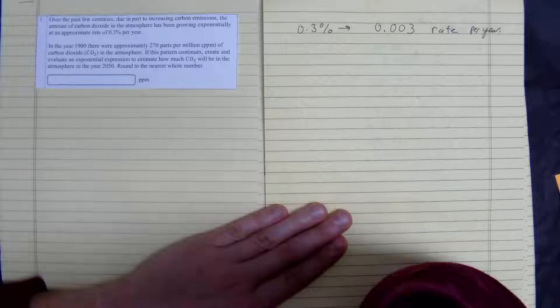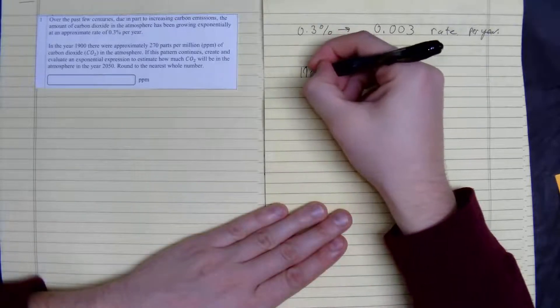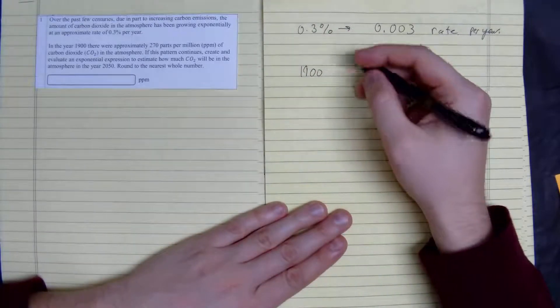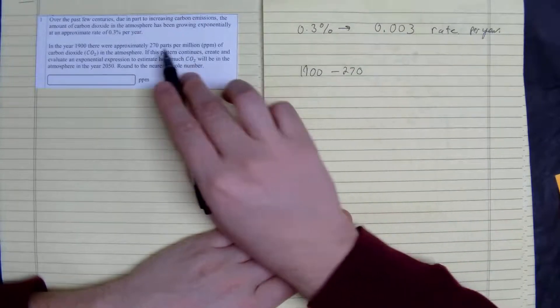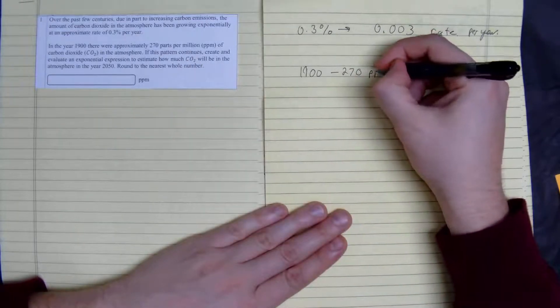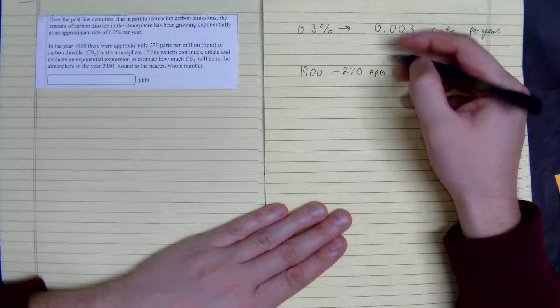In the year 1900, there was approximately 270 parts per million of carbon dioxide.